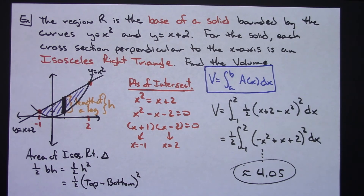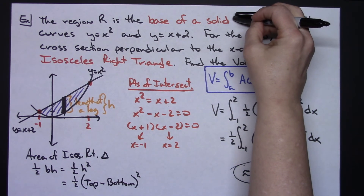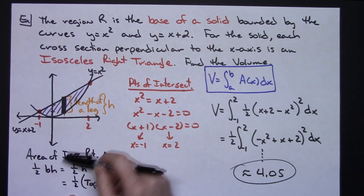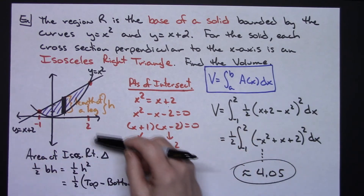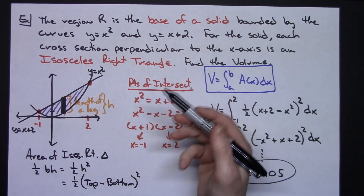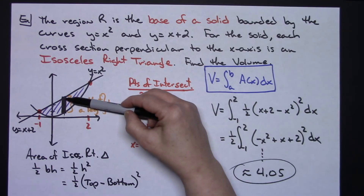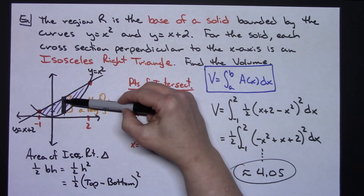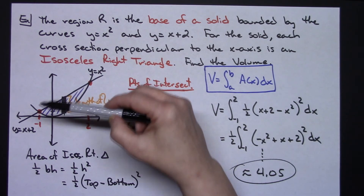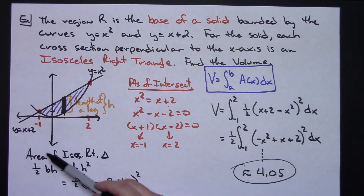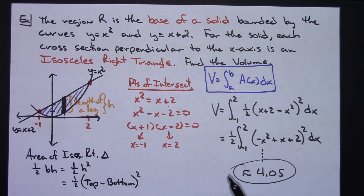When you're reading these volume problems, look for the phrases 'the base of a solid' and identify what shape the cross sections are — you're always going to be integrating the area of that shape. You won't be able to draw the three-dimensional picture, so visualize that the distance between the two curves is the key measurement for your area formula, whether it's the side of a square, or the diameter of a semicircle. Find your area formula, find your points of intersection, then set up the integral. Thanks for watching, and please don't forget to subscribe.